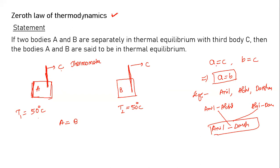In a mathematical equation: if A is equal to C, and B is equal to C, then definitely A is equal to B. This is the zeroth law of thermodynamics. If two bodies A and B are separately in thermal equilibrium with the third body C, then bodies A and B are said to be in thermal equilibrium.